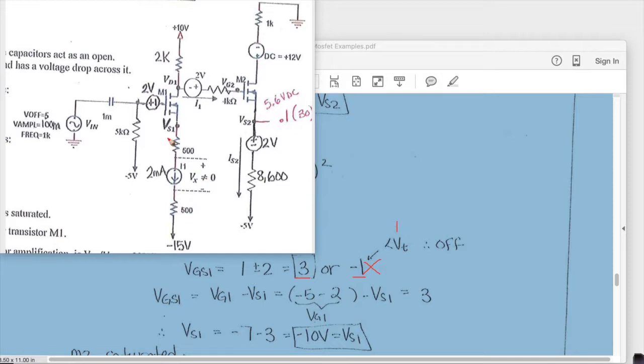So then we know VGS1 is going to be VG1 minus VS1 and we can find VG1 which is the value here. We know that there's no current flow so this is 0. So we have a minus 5 and then a minus 2 which gives us minus 7. So that gives us minus 7 volts for VG1.